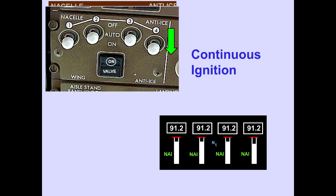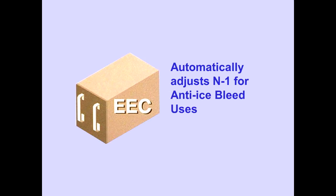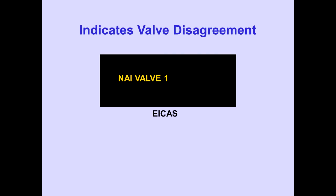When the nacelle anti-ice is on, continuous ignition is provided for the respective engine and NAI is displayed to the left of the respective N1 indication. In the normal mode, the electronic engine control automatically adjusts N1 to compensate for anti-ice bleed use. The ICAS advisory message 'NAI valve' is displayed if there is a disagreement between the commanded and actual position of the valve with the engine running.